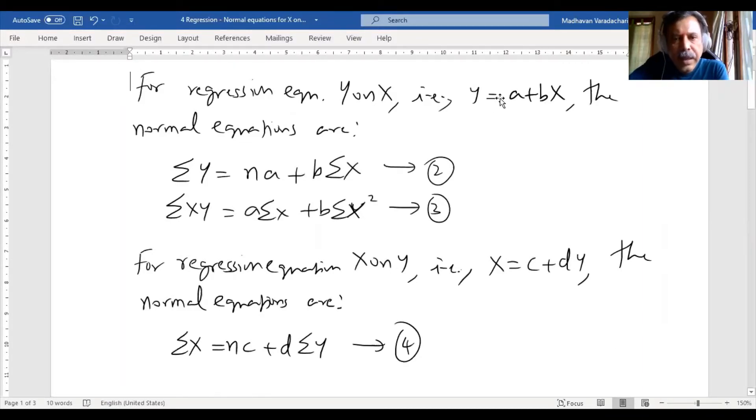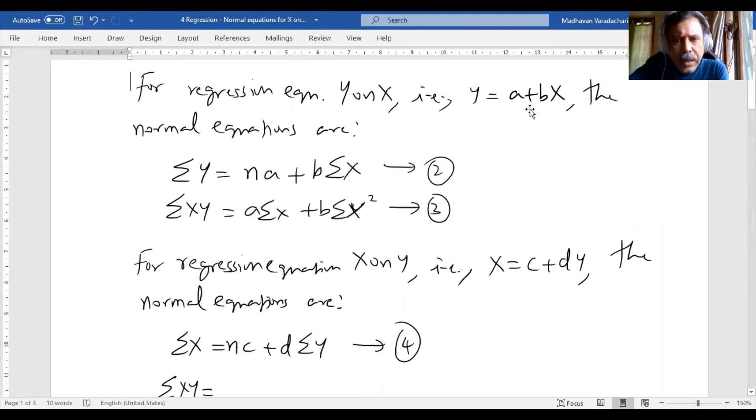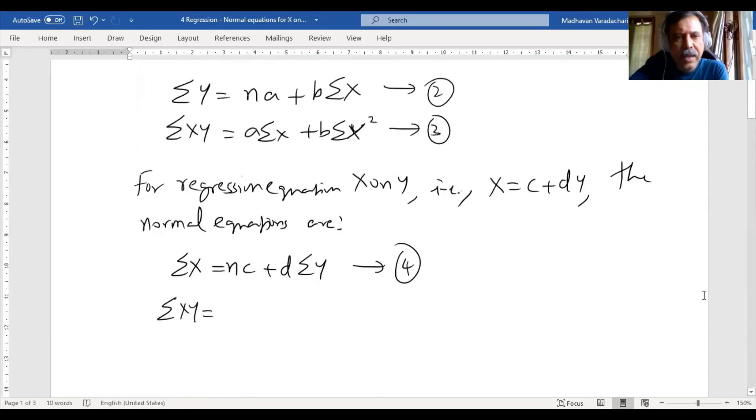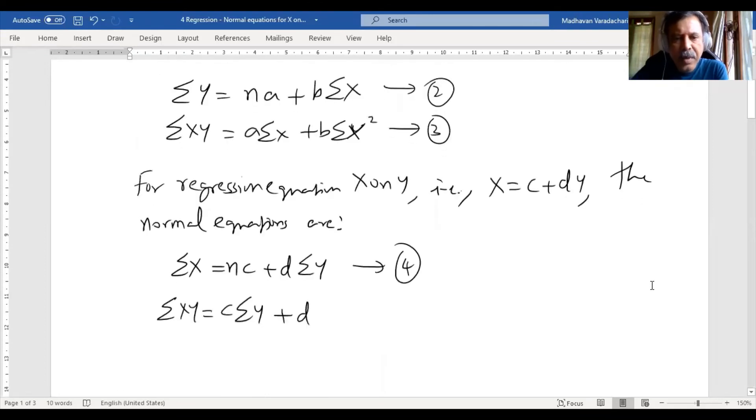For the second equation, ΣXY = CΣY + DΣY². Notice that wherever X appears, it is replaced with Y, and BΣX² becomes DΣY².